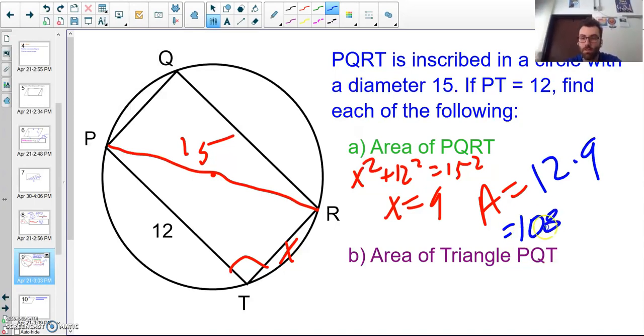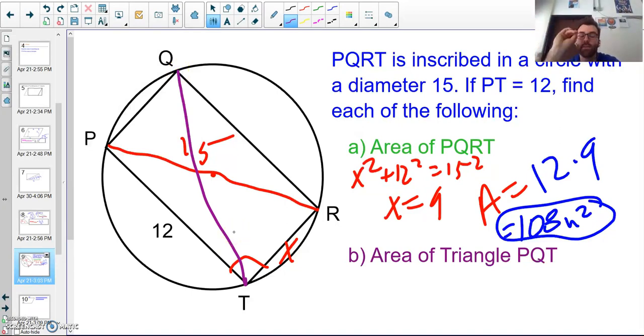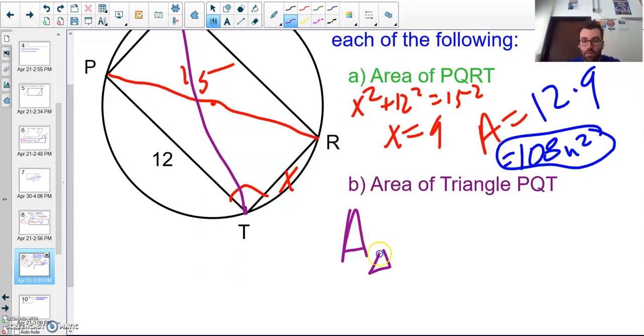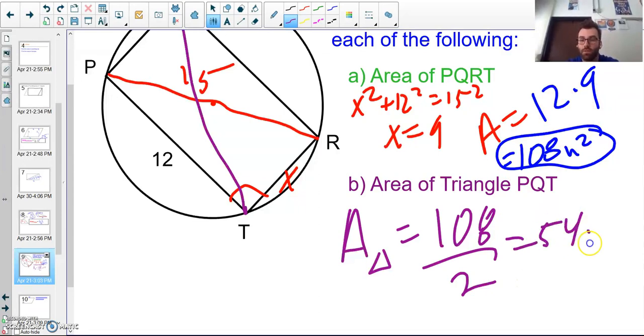To find the area of PQXT, I would do area equals 12 times 9, which is 108 units squared. To find the area of triangle PQT—my triangle goes from Q to T, we're going to pretend like that line is straight—I know that the area of the rectangle is 108, so I'll just do 108 divided by 2. My base times height would be 12 times 9 divided by 2, which gives me 54 units squared.